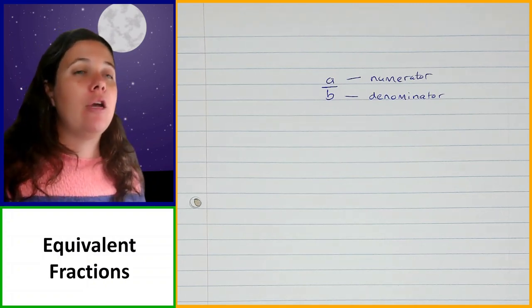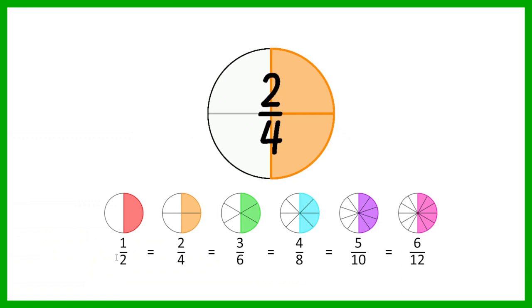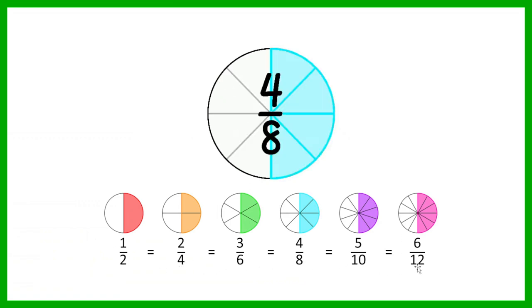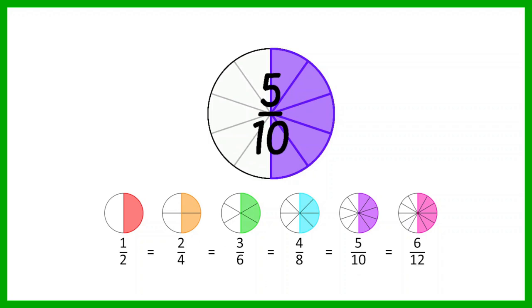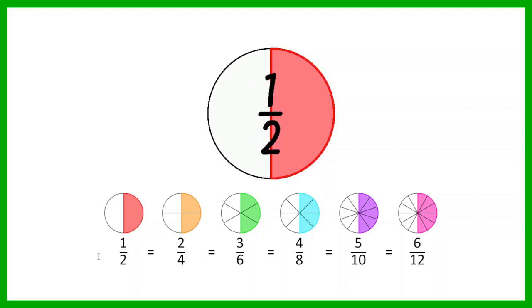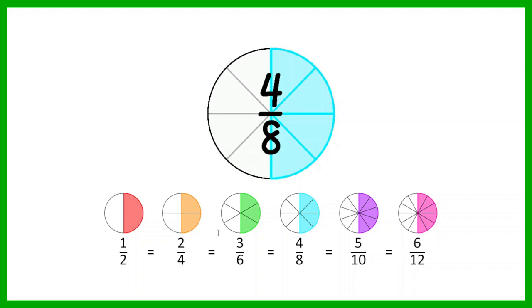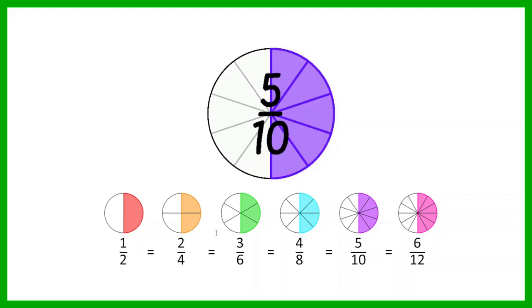Here are a couple of examples of equivalent fractions. In this example, I've got a half and two quarters and three sixths and four eighths and five tenths and six twelfths. All of these are equal to each other — they all have the same value. Even though they look different, if you look at their diagrams, in every single one of these circles, half of the circle has been colored in.